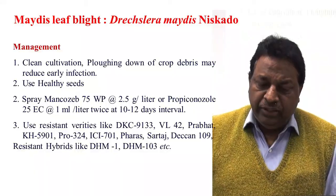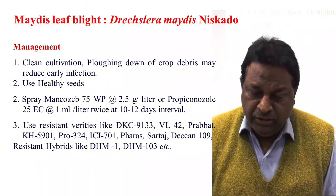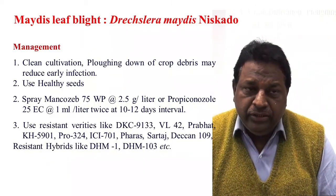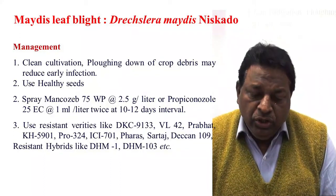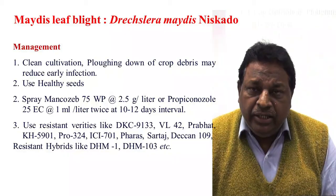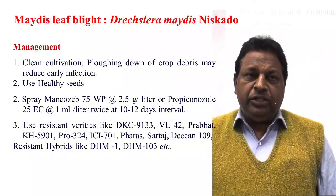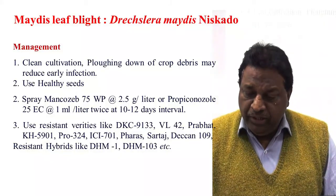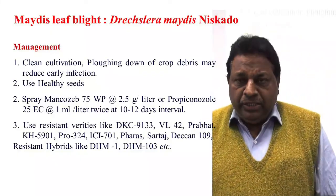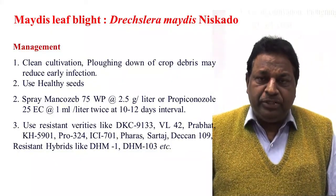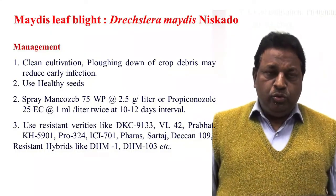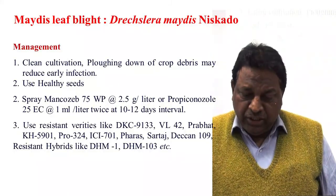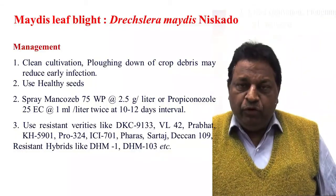For management, first, clean cultivation is very important for minimizing the disease, as lying down of crop debris may reduce early infection. Second, application of healthy seeds — this disease is seed-borne in nature, so healthy seeds reduce chances of disease appearance. If disease appears, we will apply mancozeb at 2.5 grams per litre of water, or propiconazole or hexaconazole at 0.1 percent (1 ml per litre of water). These two fungicides should be sprayed twice or thrice at 10 to 12 days interval.